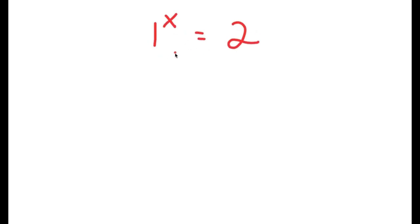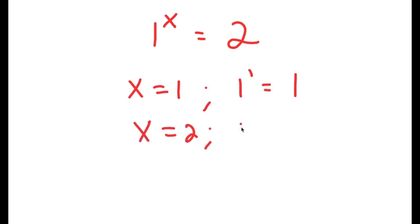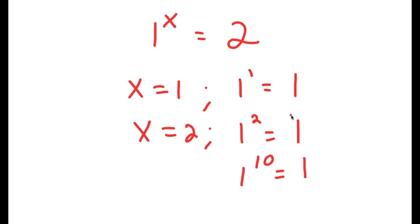In this video, I'm going to solve the equation 1 to the power of x is equal to 2. Before we even start solving this, if x equals 1, then I have 1 to the power of 1, which equals 1. And if x equals 2, then I have 1 to the power of 2, which is also equal to 1. You can even go x to the power of 10 — it's still equal to 1. So what possible value of x can make 1 to the power of x equal to 2?